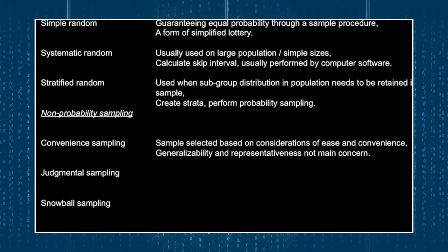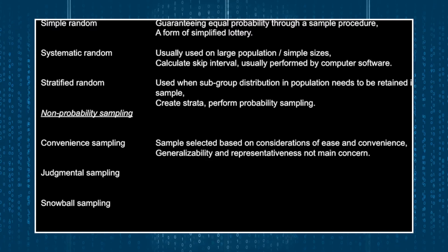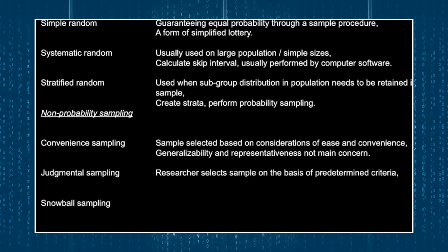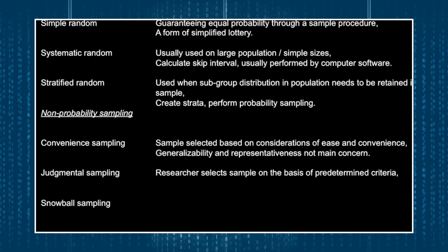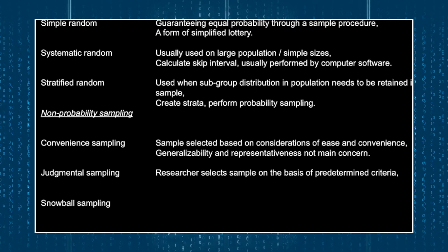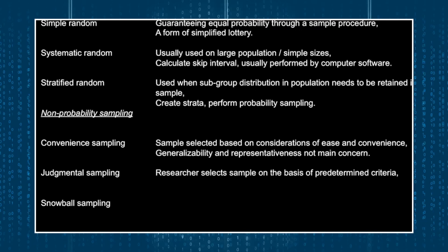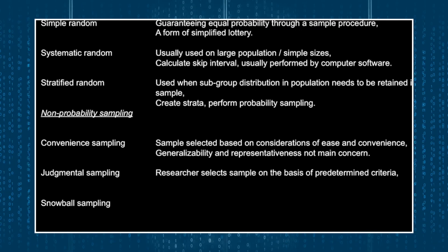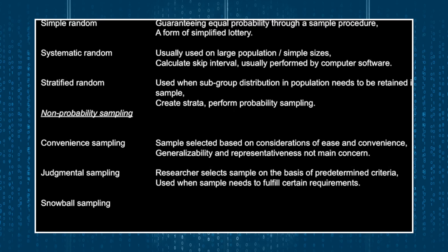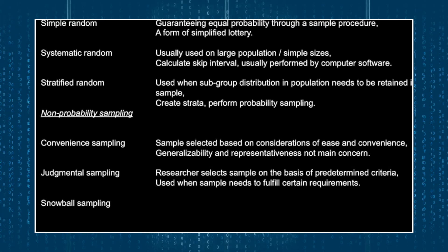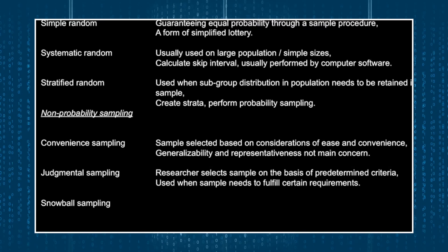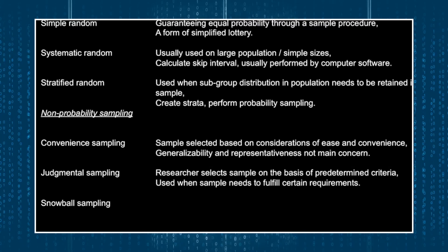The second one is called judgmental sampling. This means the researcher will set up a list of criteria, and then judge who he or she wants to include as part of the sample for a specific study. For example, if my study calls for collecting data from individuals who must fulfill a certain combination of characteristics or experiences, then judgmental sampling might be very useful.